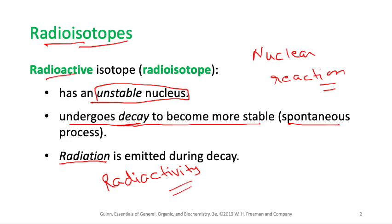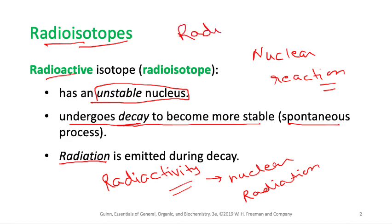We also have a special term called radioactivity. Radioactivity is the nuclear radiation — the energy emitted in the form of radiation — spontaneously emitted by an unstable radioactive isotope. We also call these unstable isotopes radioactive isotopes, or radioisotopes.